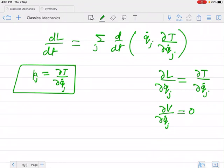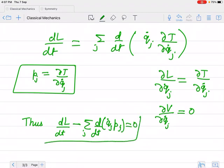Thus, dL over dt minus d by dt of (qj dot times pj) is equal to 0. Or we can write that qj dot times pj minus L is equal to a constant.